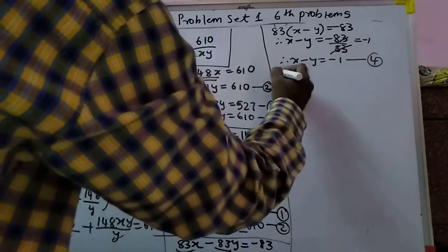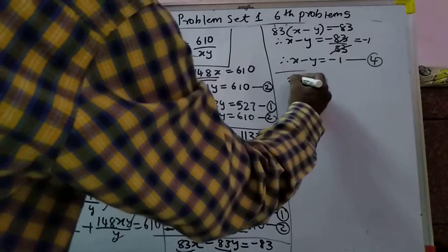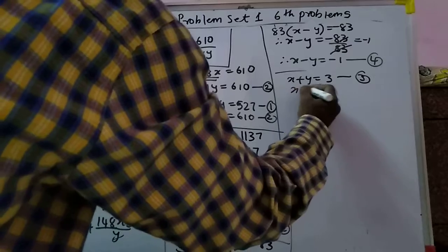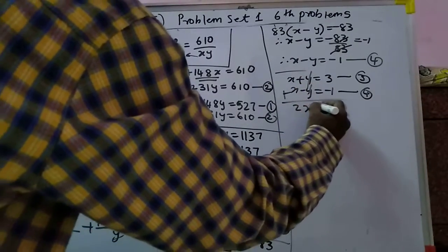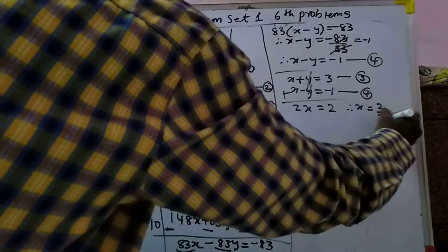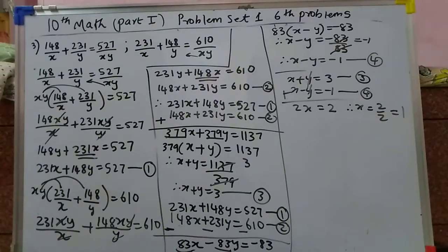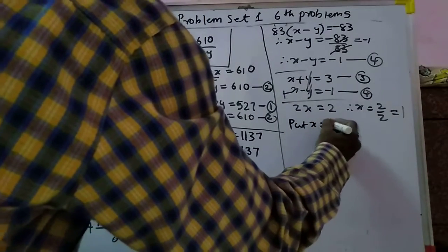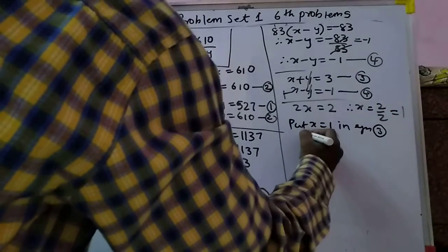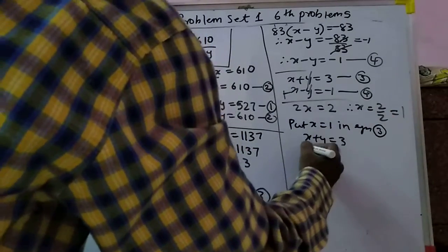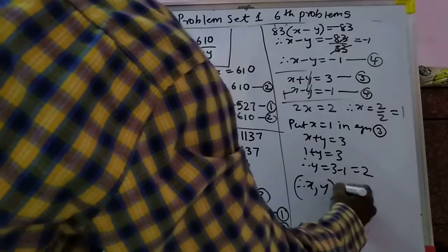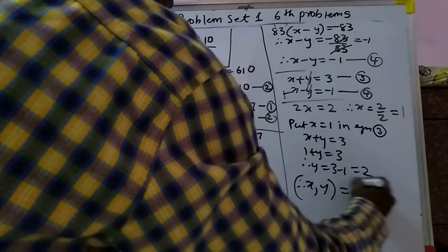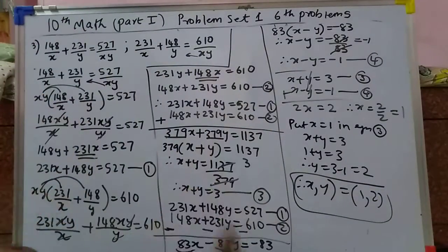Adding equation 3 and equation 4: x plus y equals 3 and x minus y equals minus 1. Adding gives 2x equals 2, therefore x equals 1. Putting x equals 1 in equation 3: 1 plus y equals 3, therefore y equals 3 minus 1 equals 2. So x comma y equals 1 comma 2. This is the final answer.